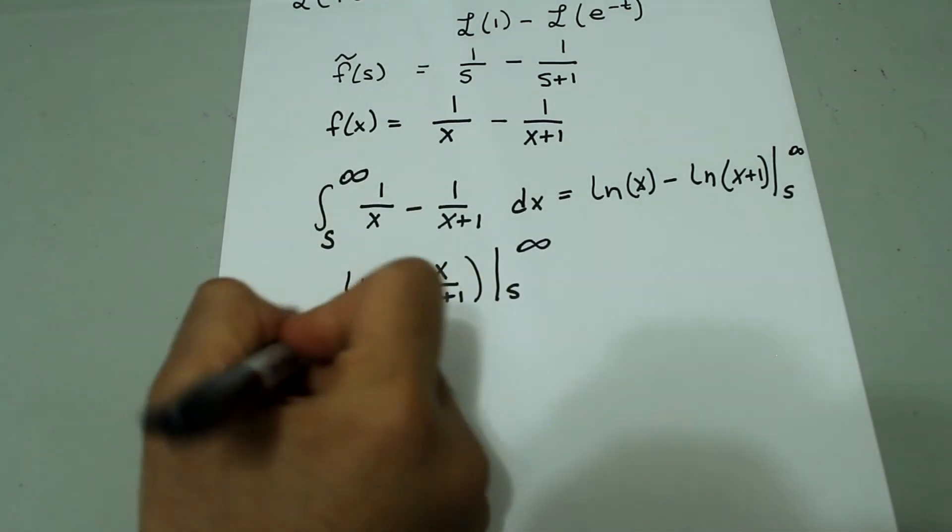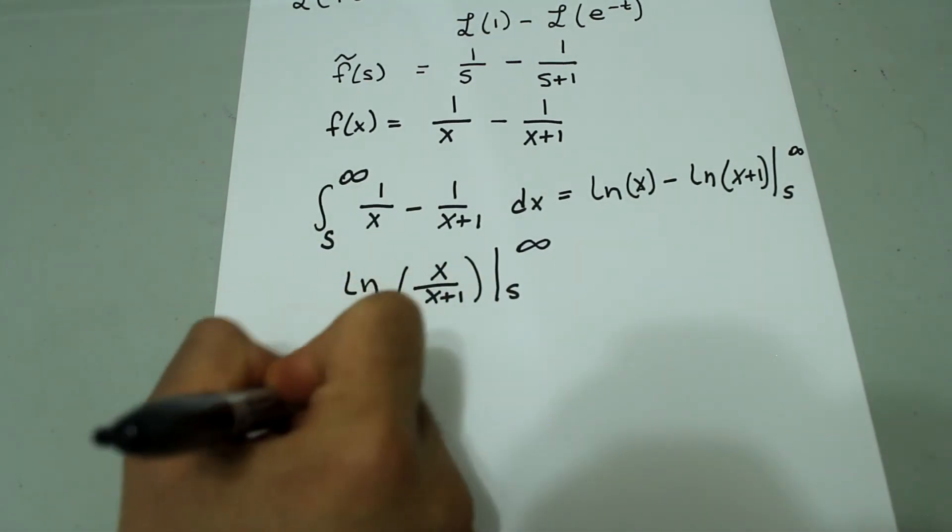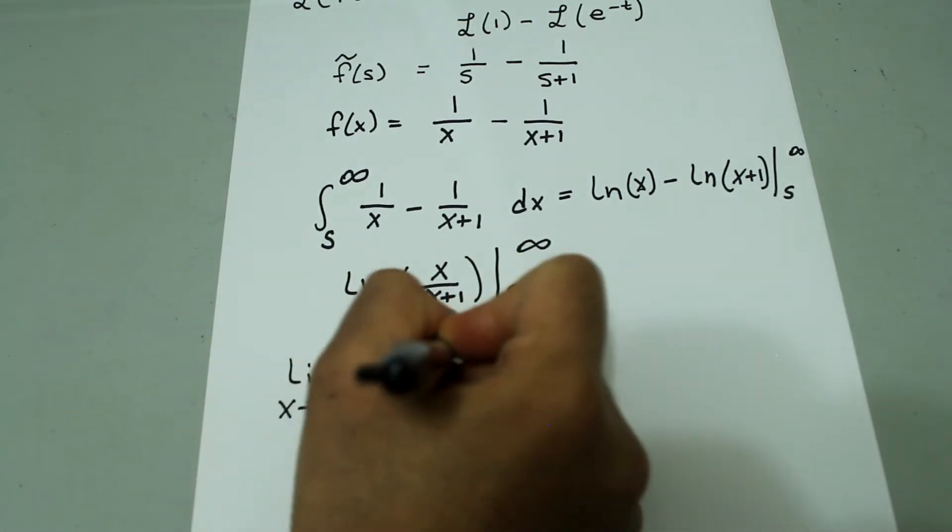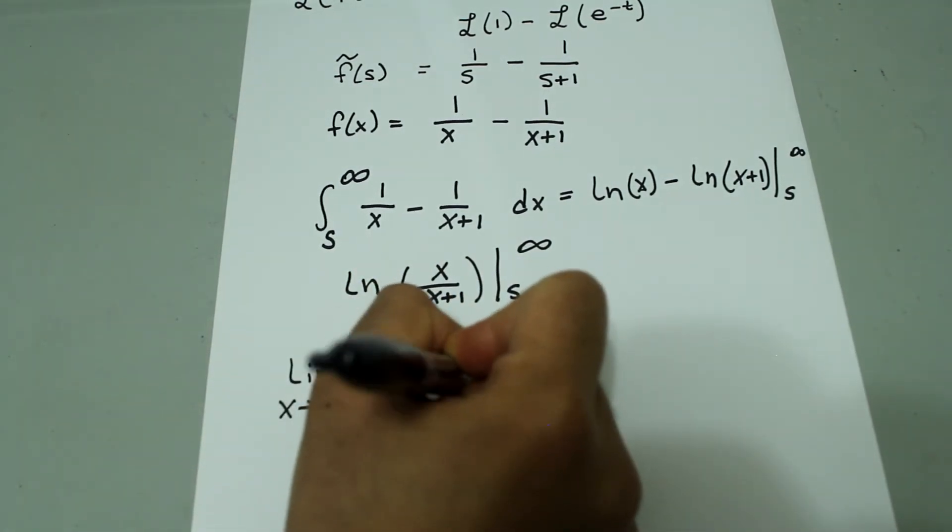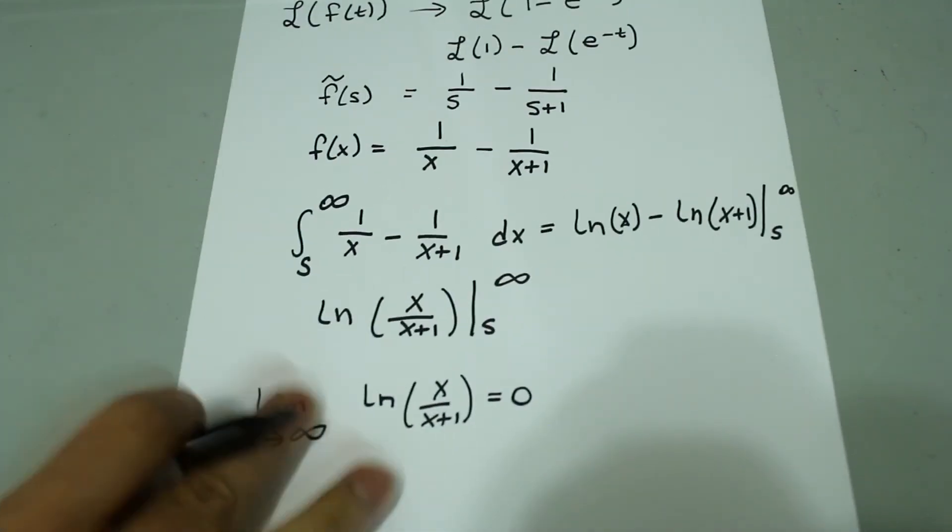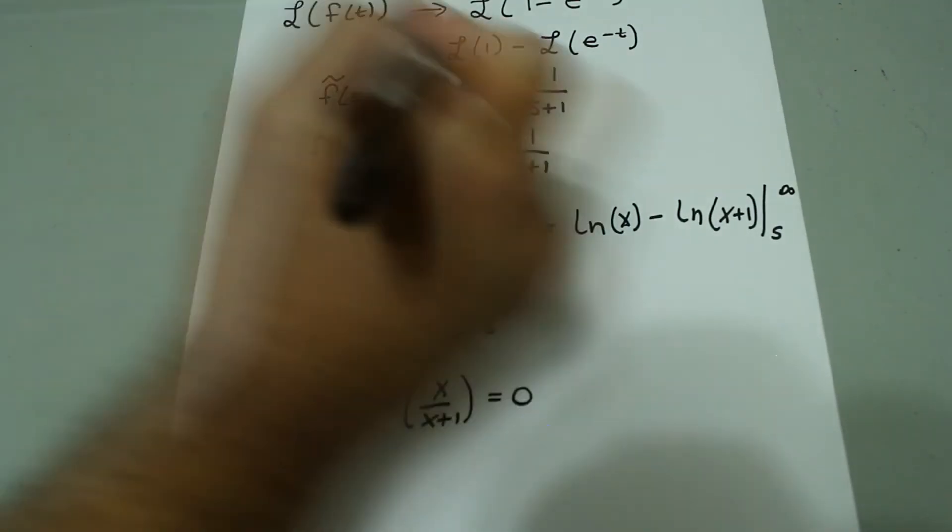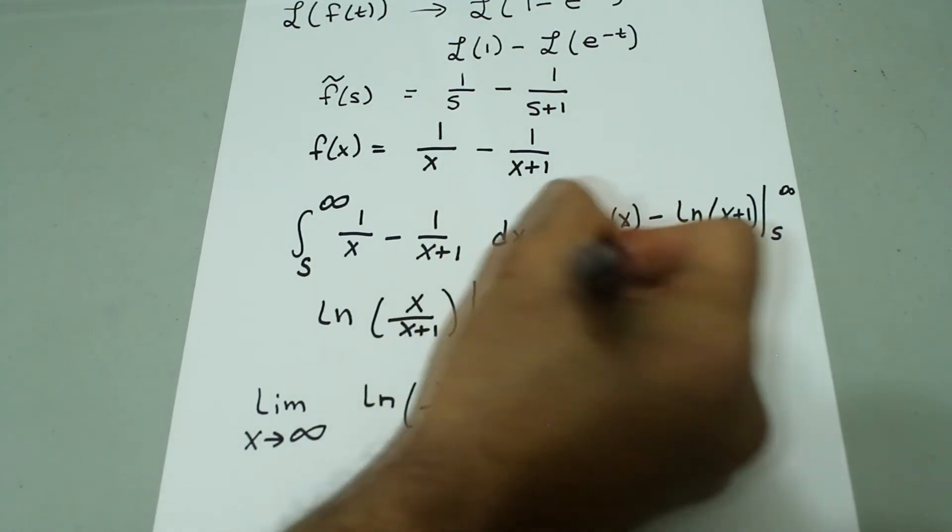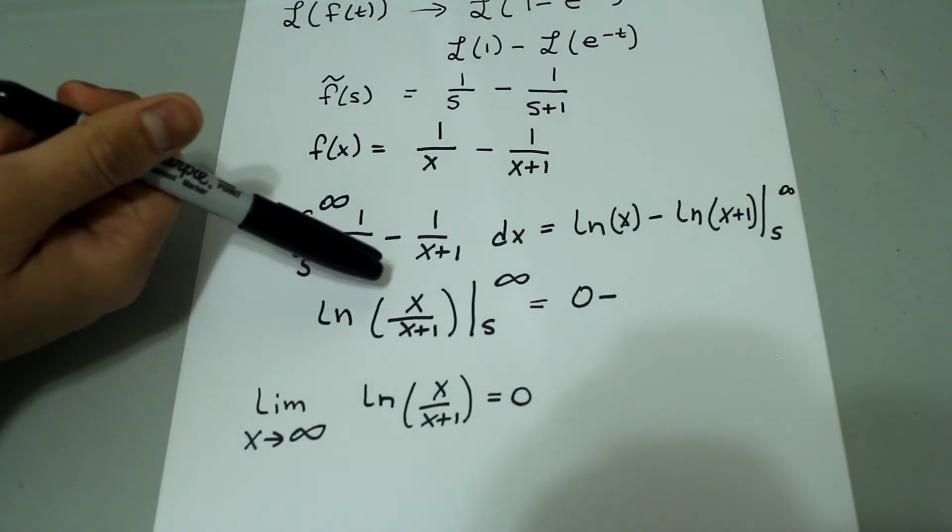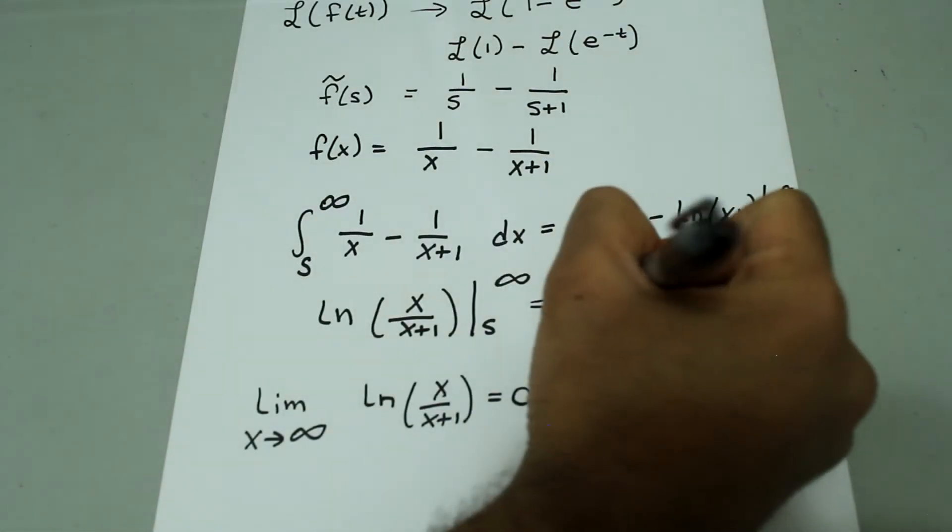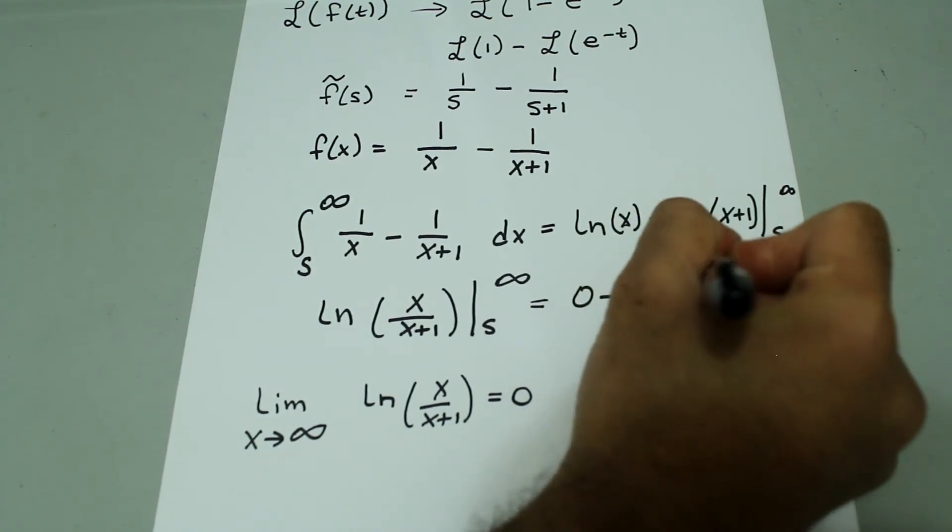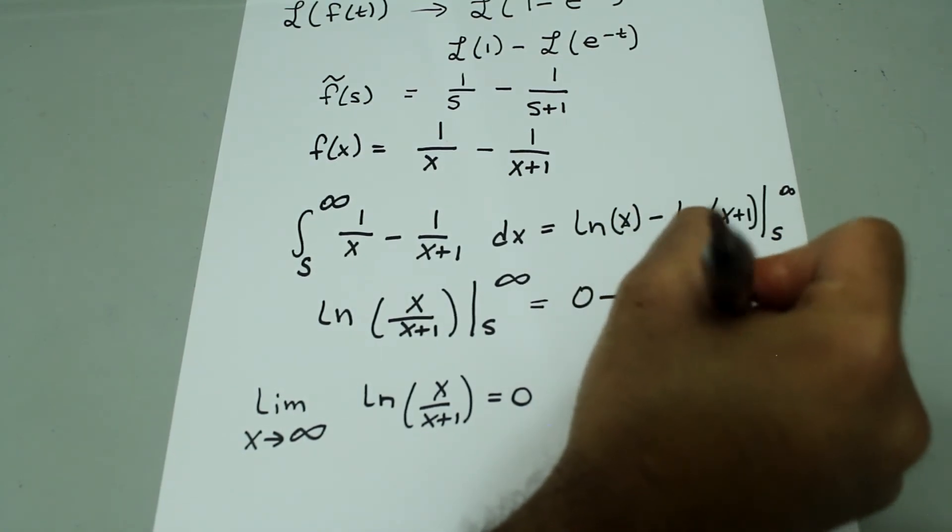Next, we're going to say that limit as x approaches infinity of natural log of x over x plus 1 is equal to 0. So, when we plug in infinity for the upper bound, we're going to get 0 minus whatever we get when we plug in the lower bound. So, that's just natural log of s over s plus 1.